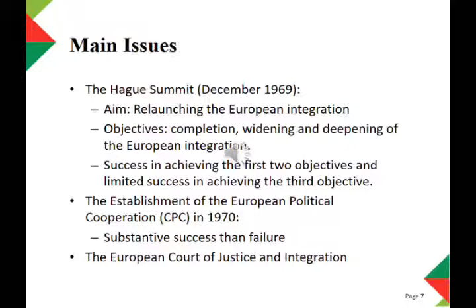The first issue discussed in this chapter is the Hague Summit held in December 1969, after the resignation of French President Charles de Gaulle. The aim of the Hague Summit was to relaunch European integration. The EC was successful in achieving the first two objectives — completion and widening — but achieved little success with regard to the third objective, deepening.